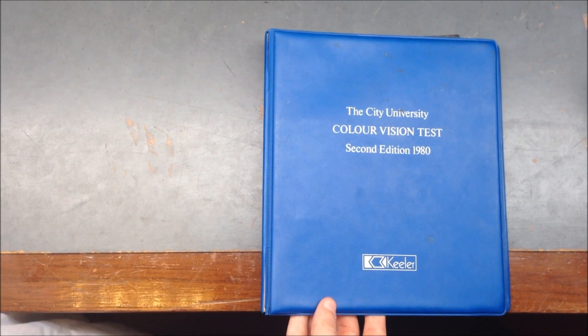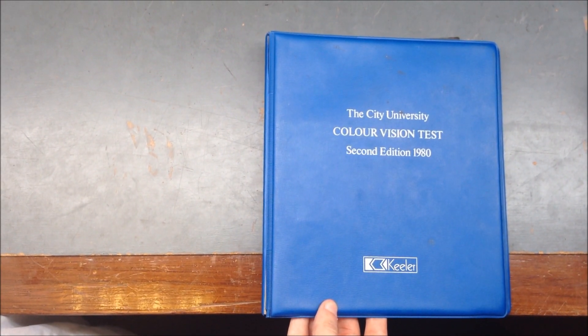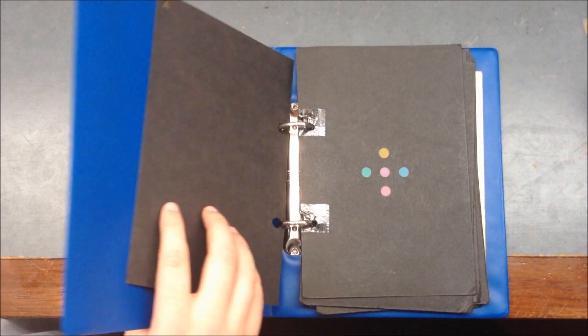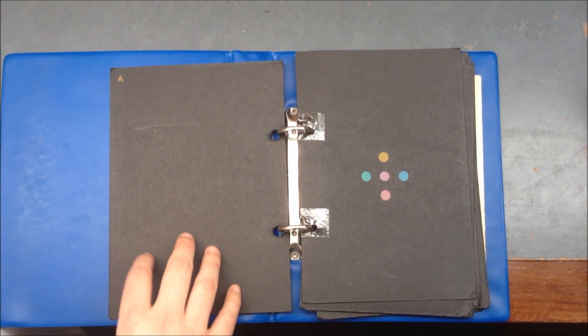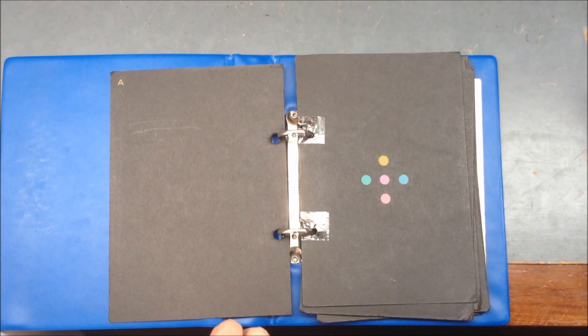This is the second edition of the City University test and it's derived from the D15 test. In each test there are 10 plates, each displayed with a central color and four peripheral colors.